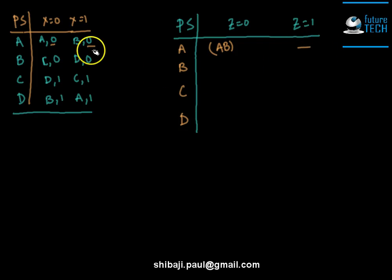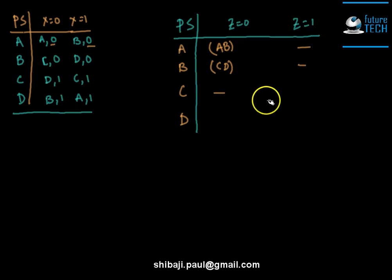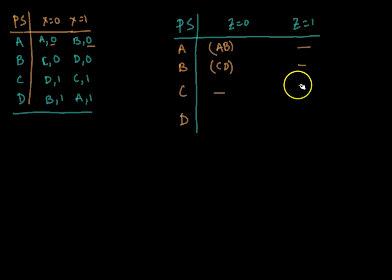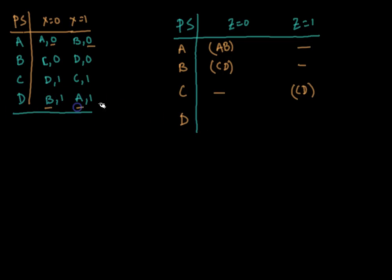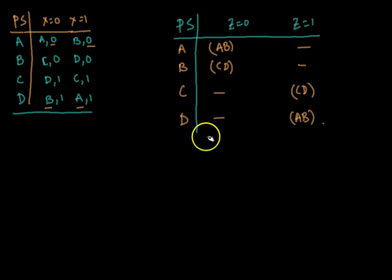For state B, both transitions produce 0, so C and D come under z=0 and nothing is under z=1. For state C, both transitions produce 1, so C and D come under z=1 and nothing under z=0. For state D, both transitions also produce 1, so A and B come under z=1 and nothing under z=0. This completes the upper half of the testing table, which we now use to build the lower half.